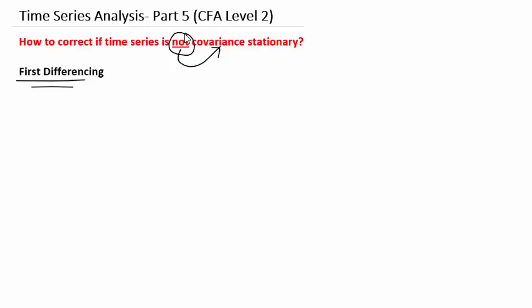We follow this process to get an entirely new time series, which is basically the change in the original time series. Suppose the original time series is x, and we determine that x follows a random walk without a drift. We can model this as x_t equals x_{t-1} plus the error term. We know that a time series following a random walk is not covariance stationary, but we want to make it covariance stationary through first differencing.